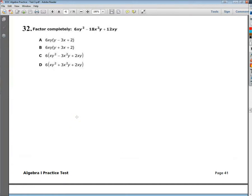Welcome, this is the Algebra 1 end of course practice test number 3, question number 32. The question says, factor completely 6xy squared minus 18x squared y plus 12xy.